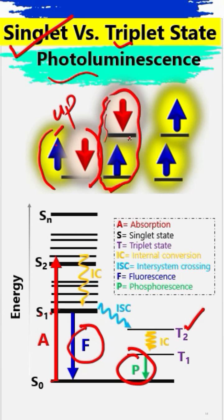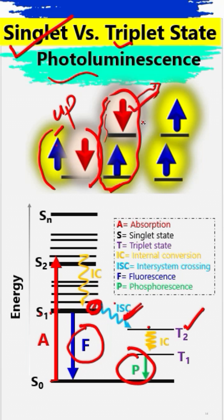When this electron changes the spin — flips the spin — it becomes the triplet state. This happens when the electron transitions from the singlet to the triplet state. This process is called intersystem crossing, and because of this the electron flips its spin and we get the triplet state.